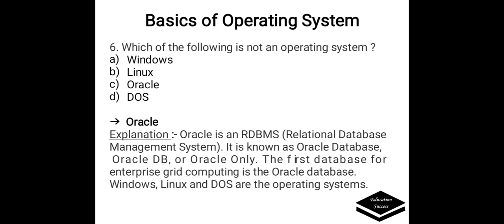Which of the following is not an operating system? Options are A. Windows, B. Linux, C. Oracle, D. DOS. Correct answer is C, Oracle. Oracle is an RDBMS, i.e., Relational Database Management System, also known as Oracle Database or Oracle DB. The first database for enterprise grid computing is the Oracle Database. Windows, Linux, and DOS are operating systems.